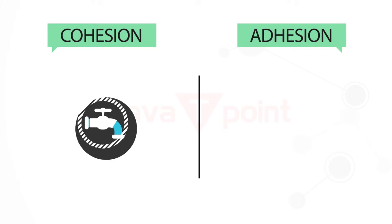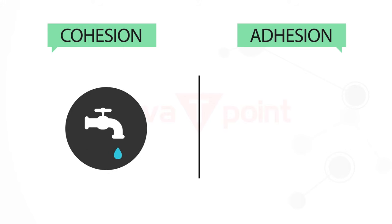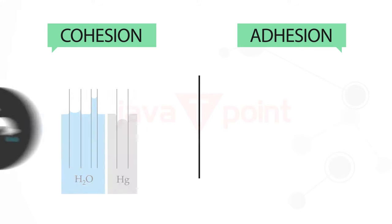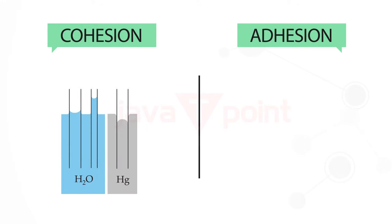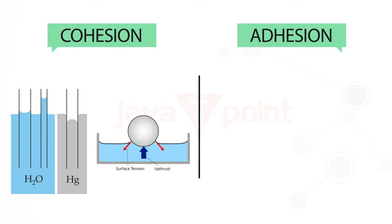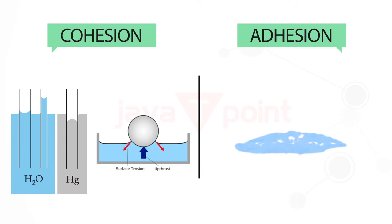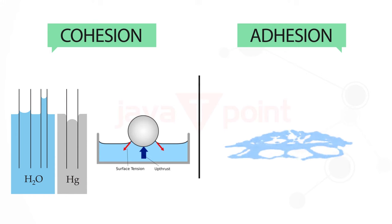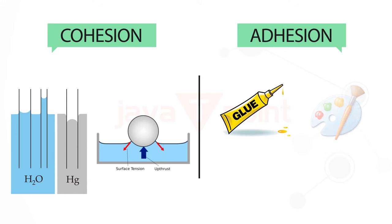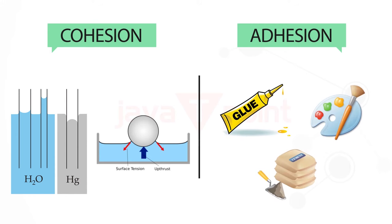Cohesion causes the formation of water droplets, capillary action, and surface tension of a liquid. A liquid spreads on a solid surface due to adhesion — for example, glue, paints, and cement work due to adhesion.